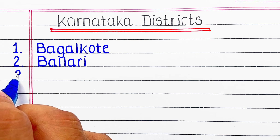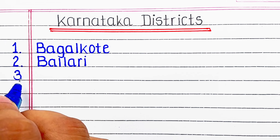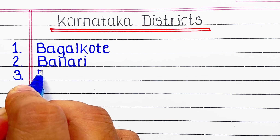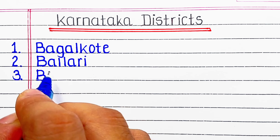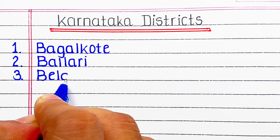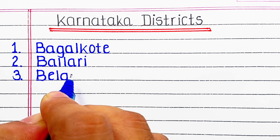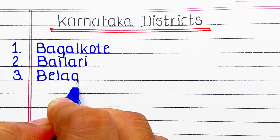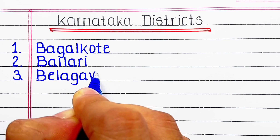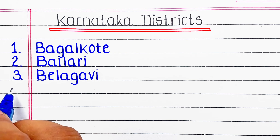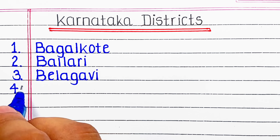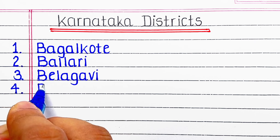The Indian state of Karnataka consists of 31 districts grouped into 4 administrative divisions. The state has three principal variants: the western coastal stretch, the hilly belt comprising the Western Ghats, and the plains comprising the plains of the Deccan Plateau. Now let's start learning the names of the districts one by one.